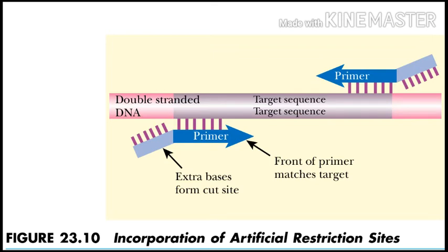One way to create convenient restriction cut sites at the end of PCR fragments is to incorporate them into the primers. When designing the primers, artificial restriction enzyme recognition sites are added at the far ends of the primers. As long as the primer has enough bases to match its target site, adding a few extra bases at the end will not affect the PCR reaction.